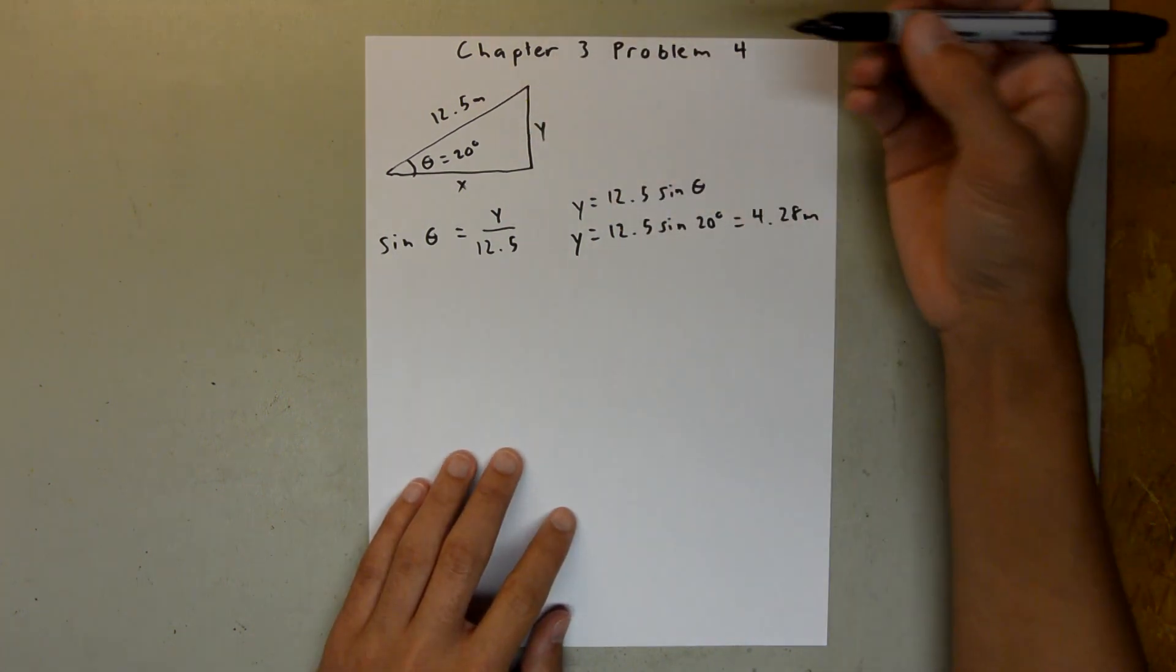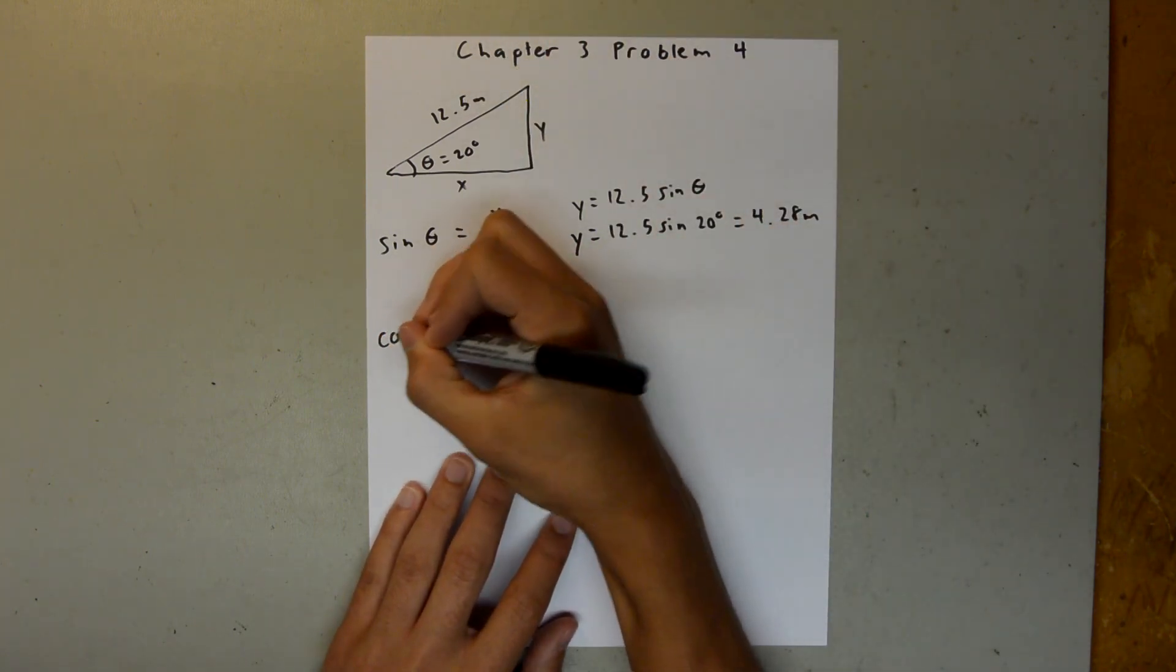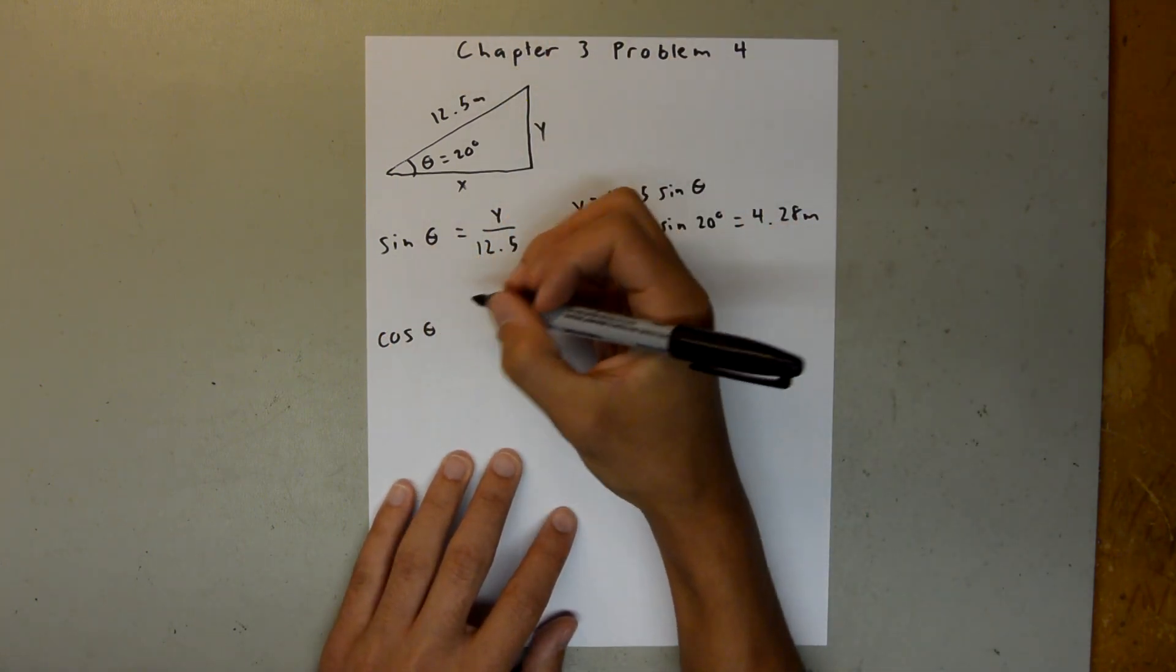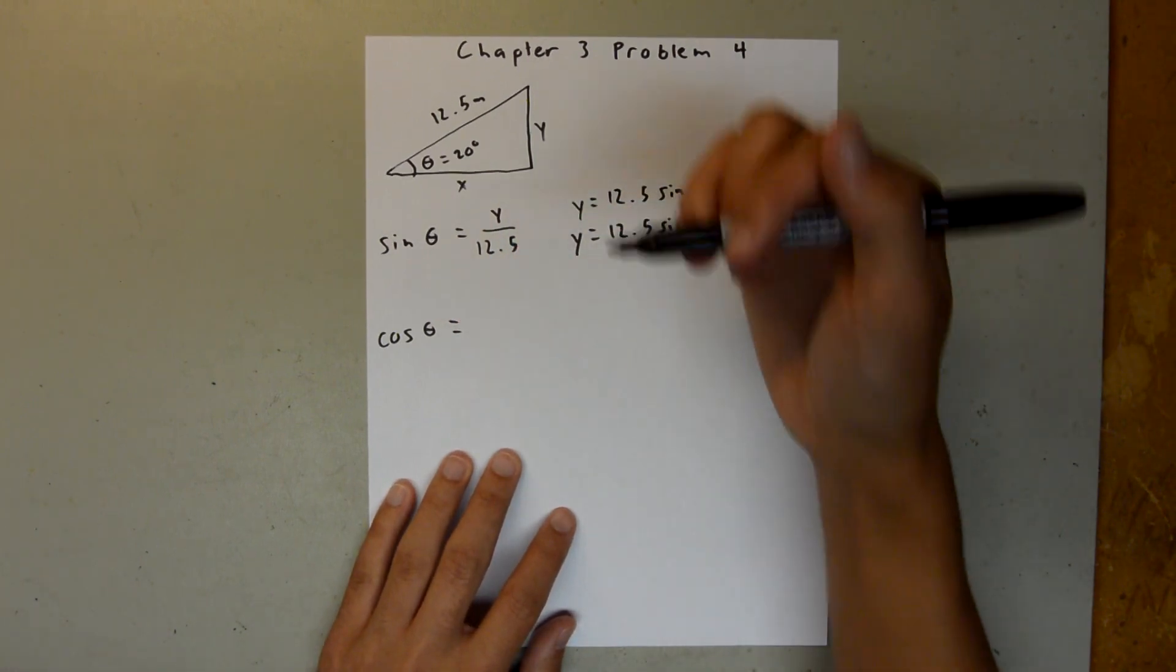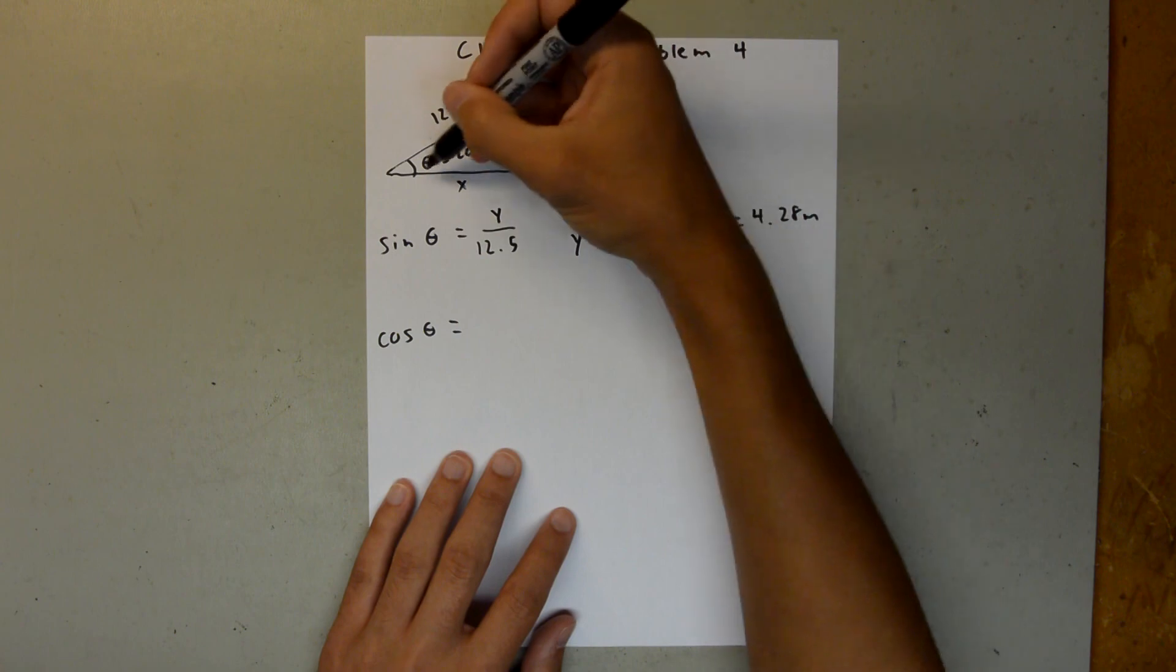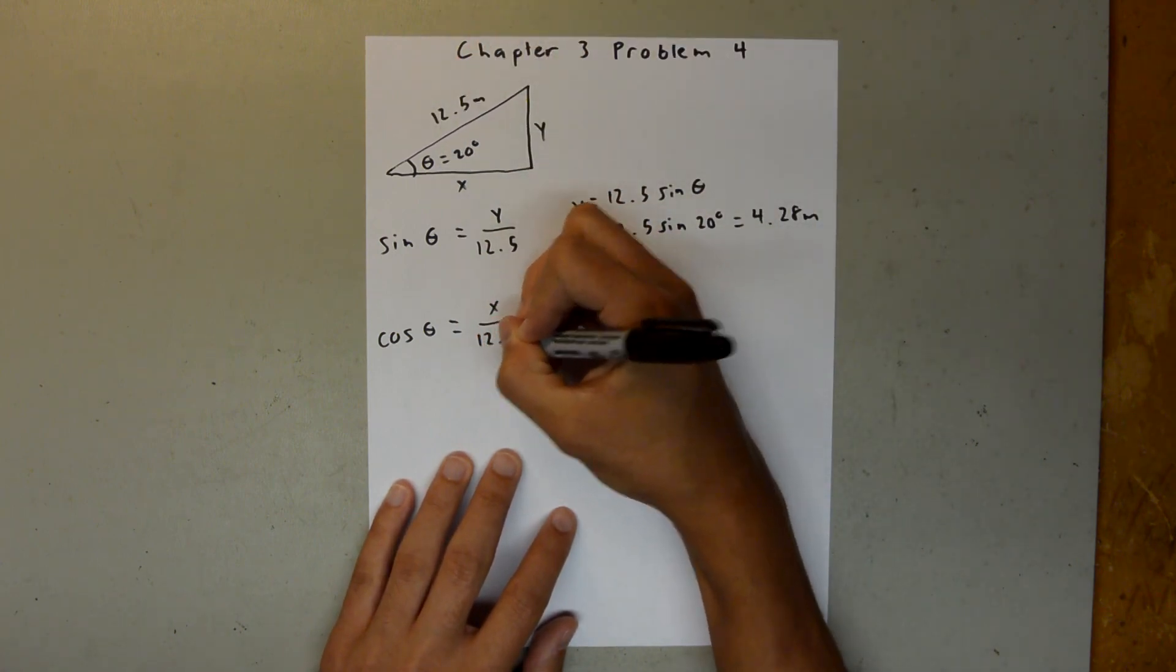And then to solve for x, we want to do the same thing, except we want to use cosine. And the cosine is equal to adjacent over hypotenuse. So this is your adjacent side to the angle, and this is your hypotenuse. So x over 12.5.